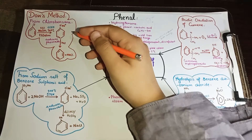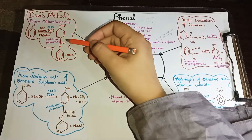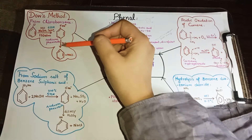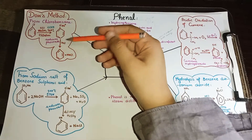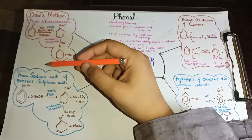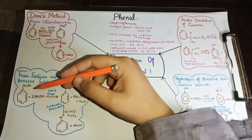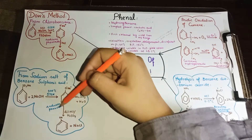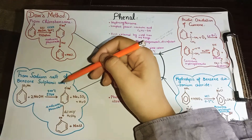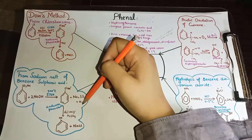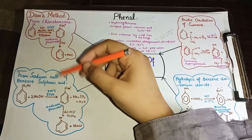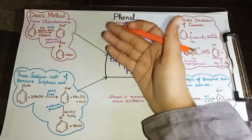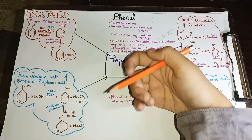Sodium phenoxide is formed as an intermediate, which is more stable than the direct products. Chlorine leaves as HCl as a side product. The sodium phenoxide is then reacted with HCl or H2SO4, which gives us phenol as the final product.